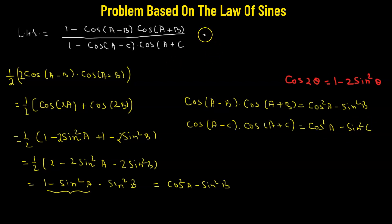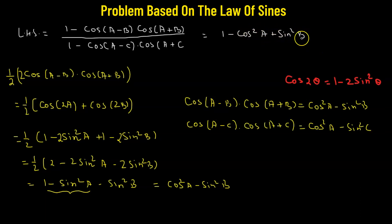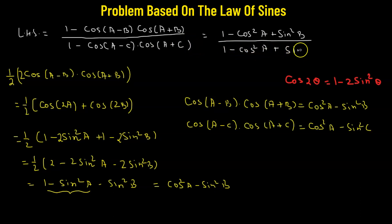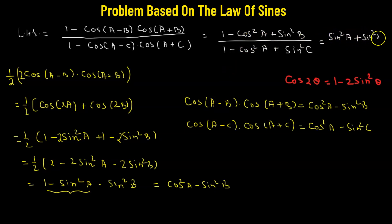Substituting back, the left-hand side becomes: 1 minus (cos²A − sin²B) divided by 1 minus (cos²A − sin²C). Expanding: the numerator is 1 − cos²A + sin²B = sin²A + sin²B, and the denominator is 1 − cos²A + sin²C = sin²A + sin²C.